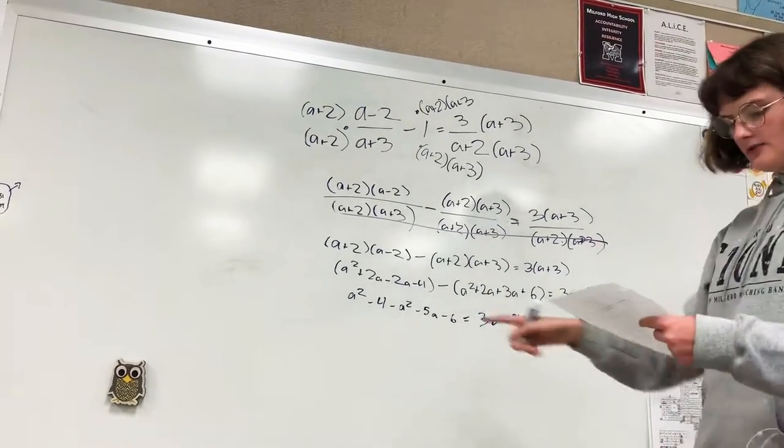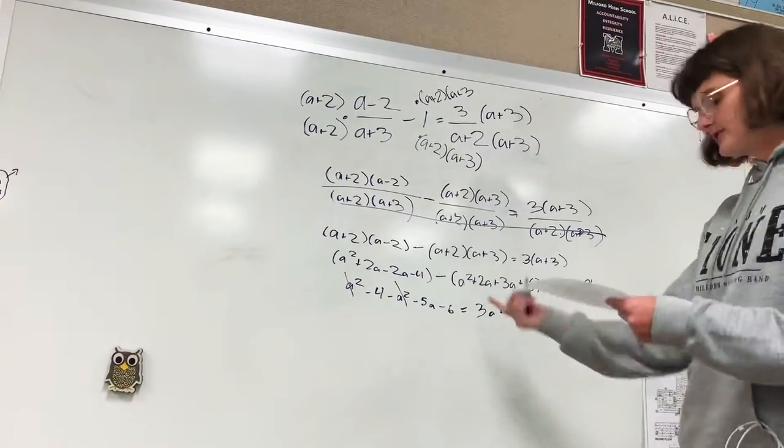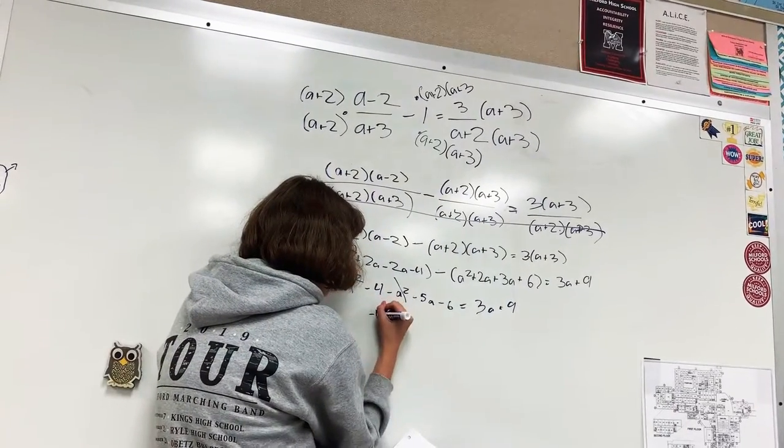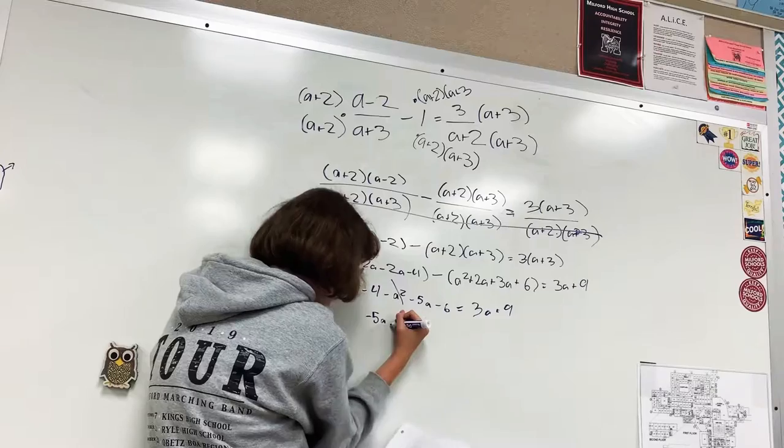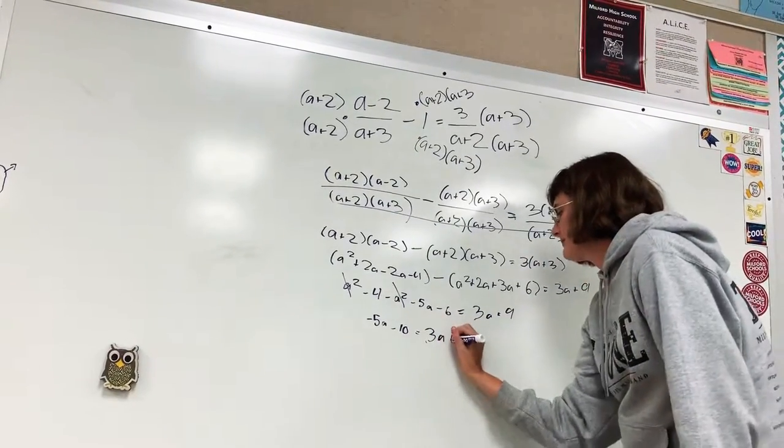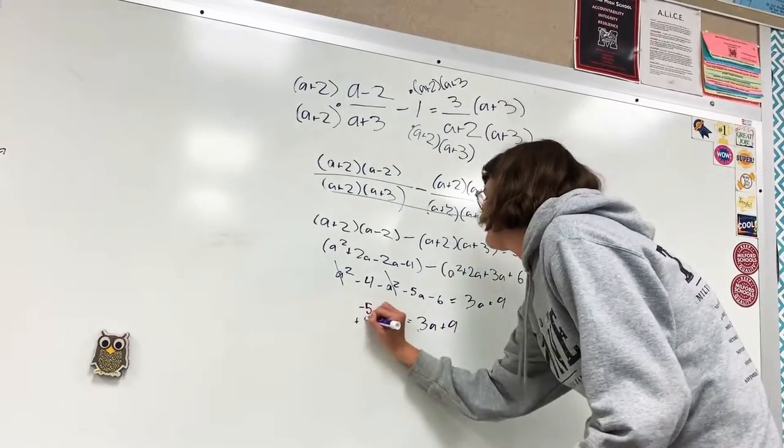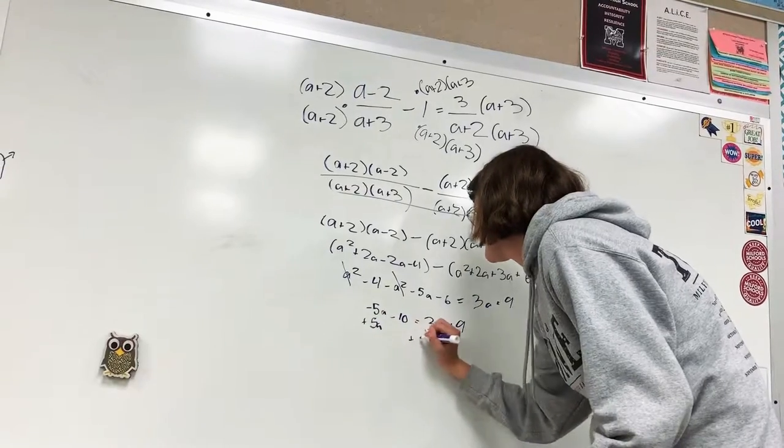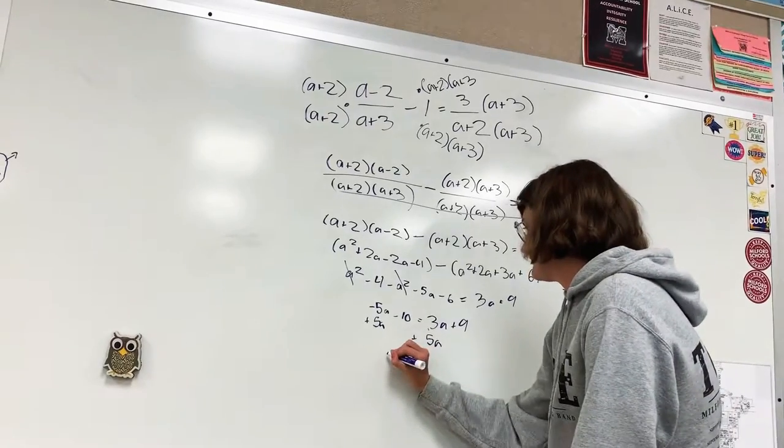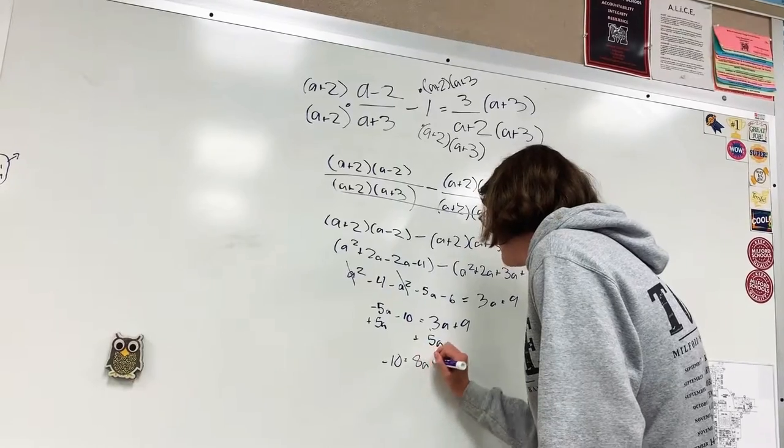And then you just combine all of these. So the a² cancels out, so now you just combine everything else, which will give you -5a - 10 = 3a + 9. And then what you want to do is just add 5a to both sides, just solve it like a normal equation now. So then you end up with -10 = 8a + 9.